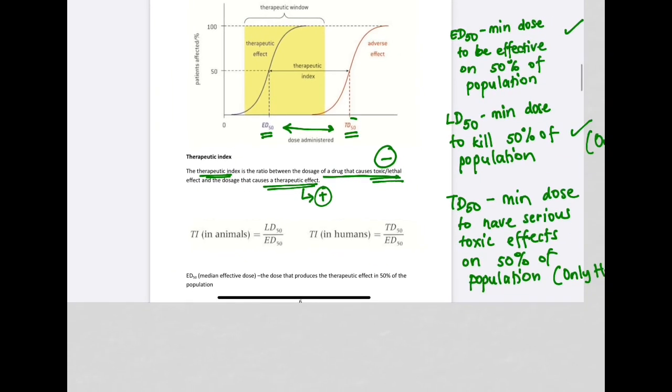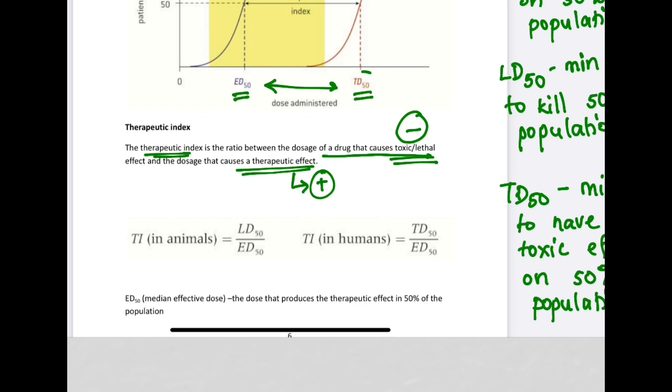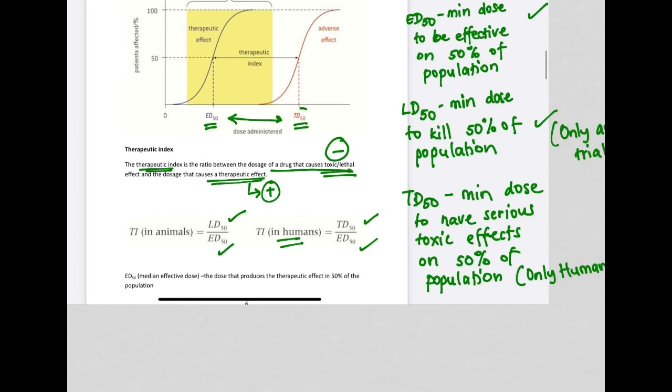In animals, we'll be looking at the ratio of lethal dose against effective dose. And in humans, we'll be looking at the ratio of toxic dose against effective dose. In humans, we don't look at lethal dose because we don't want to kill people during the trial.